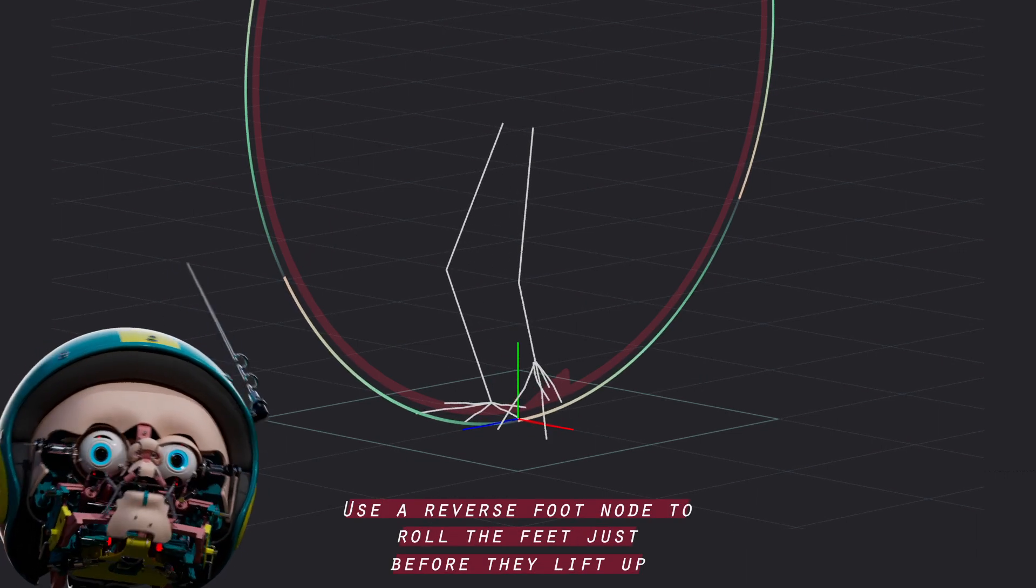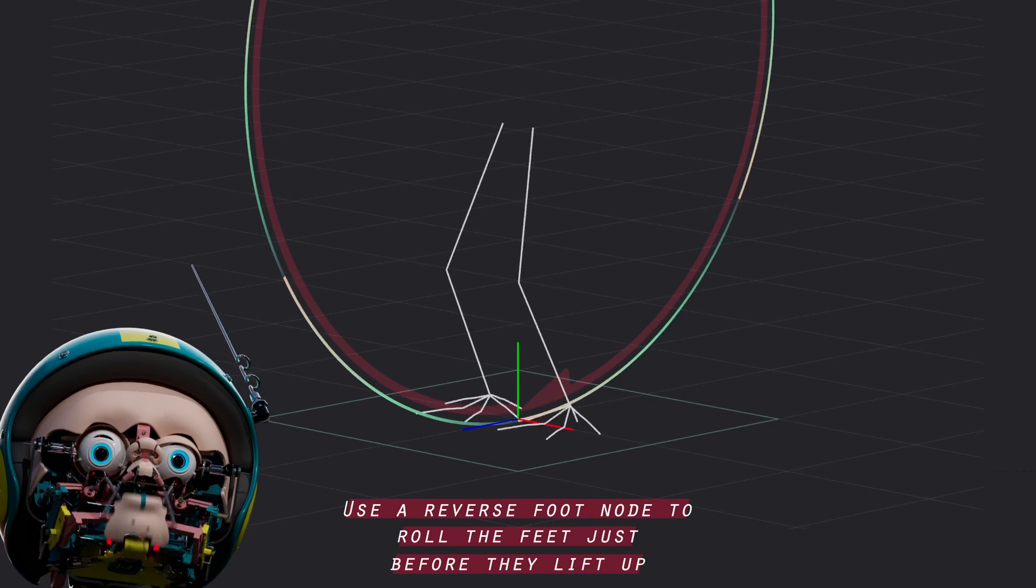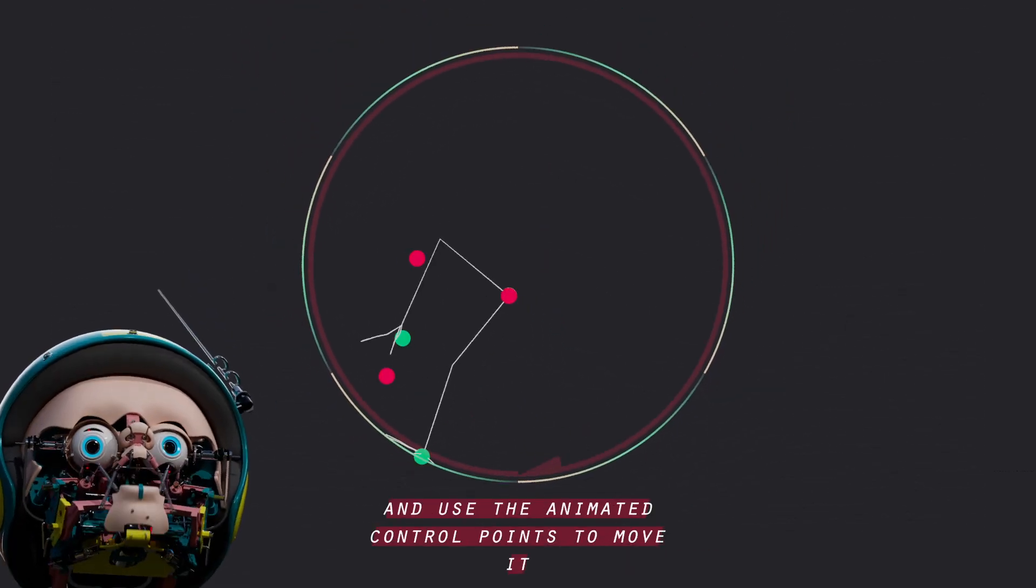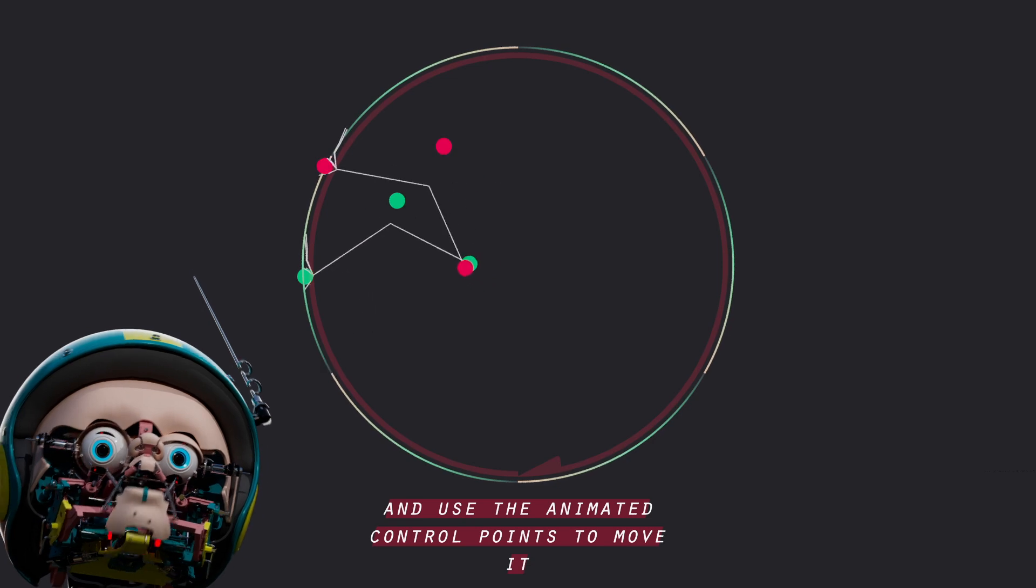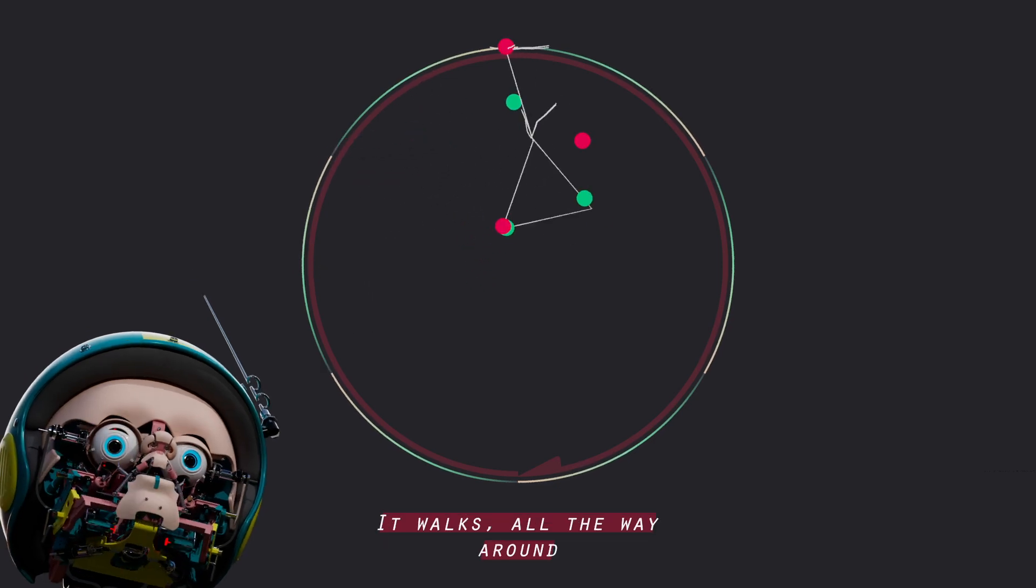Use a reverse foot node to roll the feet just before they lift up. Attach an IK chain to the legs and use the animated control points to move it. It walks all the way around.